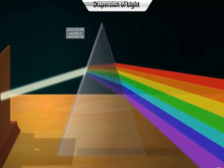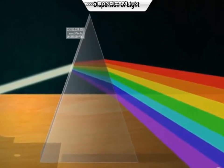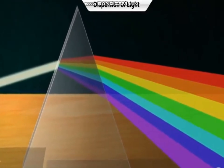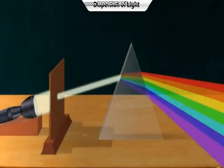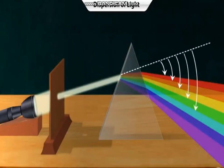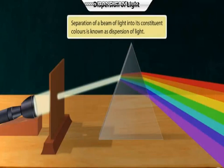Thus, each color bends through a different angle with respect to the incident ray, and the colors split up. Separation of a beam of light into its constituent colors is known as dispersion of light, and the band of colors is known as a spectrum.